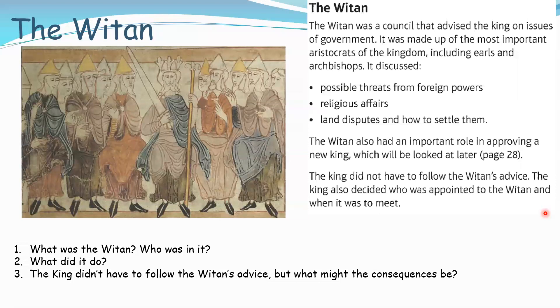The next limit to the king's power was the Witan. The Witan was a council made up of the most important and powerful people in the country - the key religious leaders, the most powerful archbishops, the earls, and some of the most powerful thanes. The Witan's primary job was to advise the king on how to run his country. They were like the senior leadership team, and pretty much ran the rest of the country.